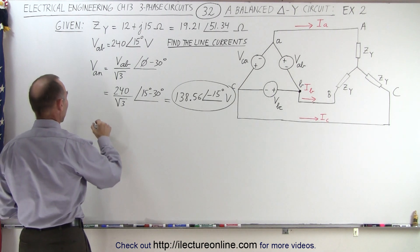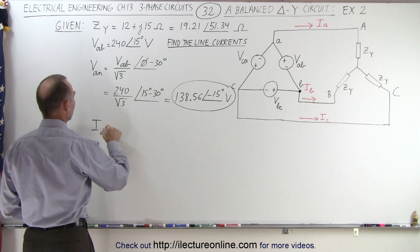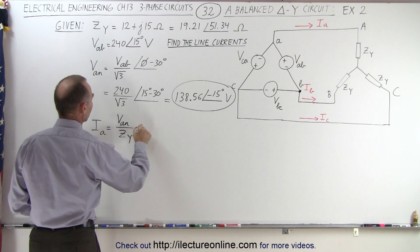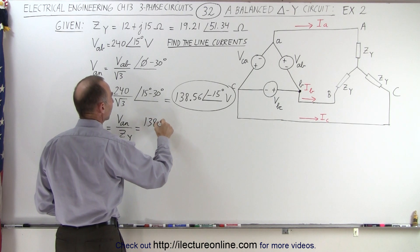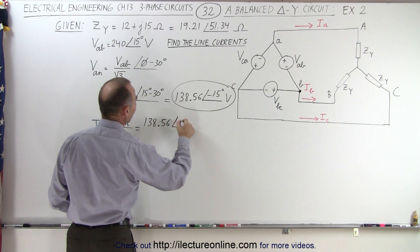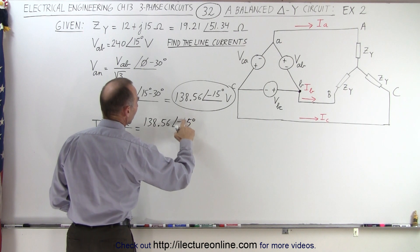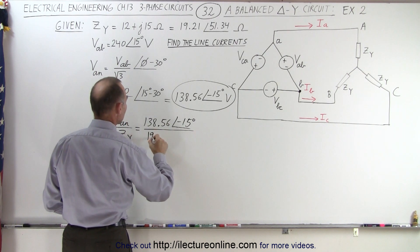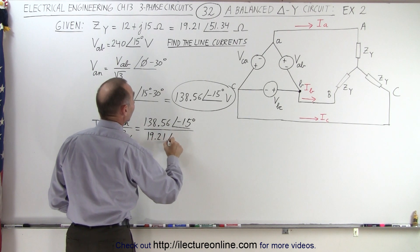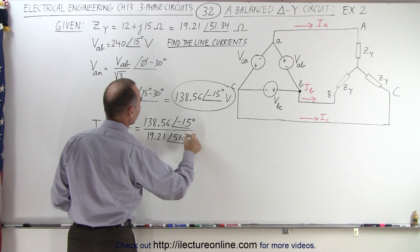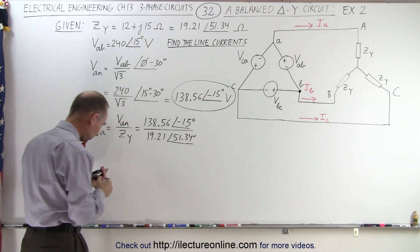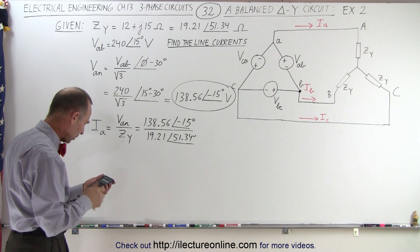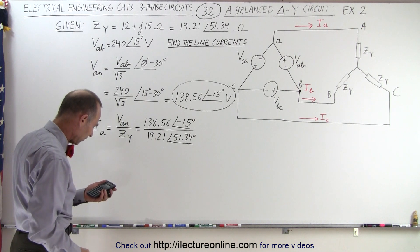Now we can find I sub A, which is equal to the equivalent phase voltage VAN divided by the impedance. So in this case that would be 138.56 with a phase angle of minus 15 degrees divided by the impedance, which is 19.21 with a phase angle of 51.34 degrees. Taking 138.56 divided by 19.21 gives us 7.21.